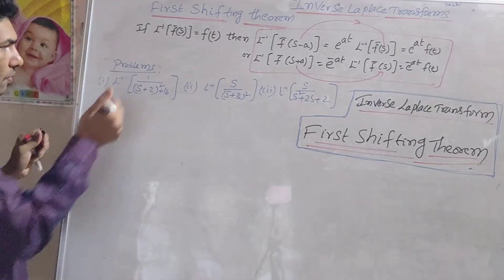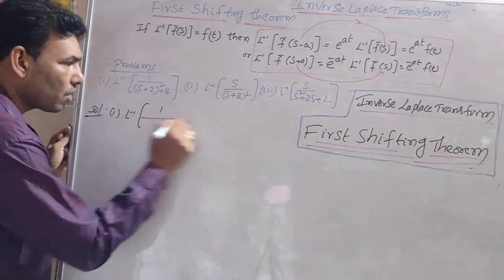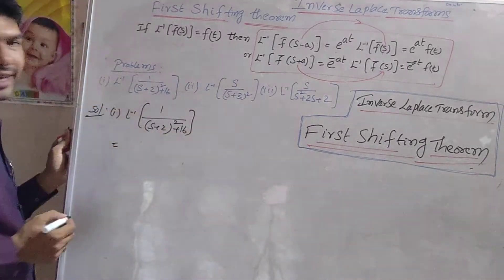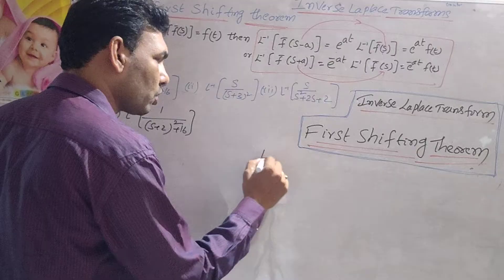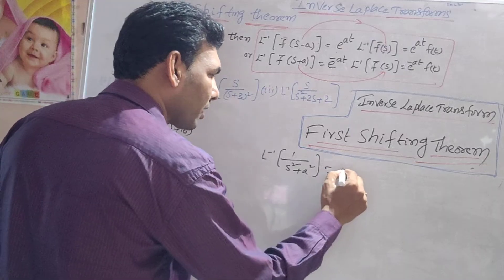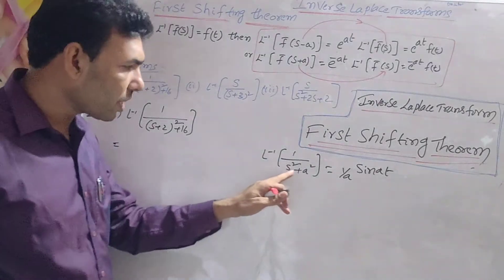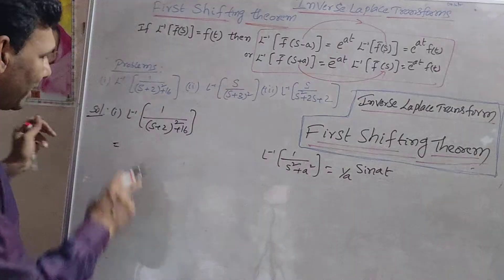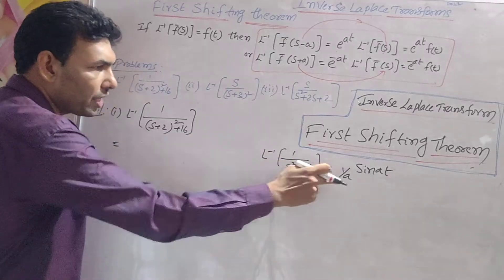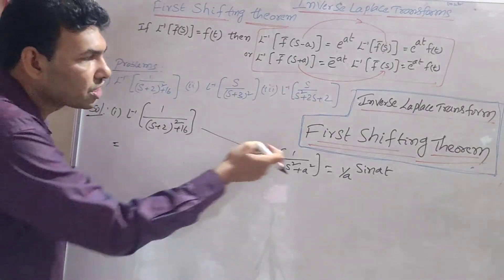The first problem is: L inverse of 1 by (s plus 2) whole square plus 16. We recall the formula: L inverse of 1 by (s² plus a²) equals (1/a) sin(at). We will use this formula: L inverse of 1/(s² + a²) = (1/a) sin(at).